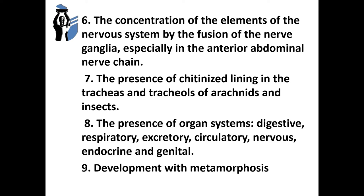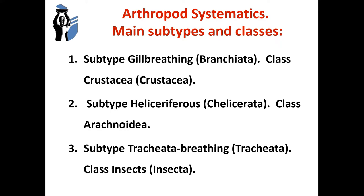There is a chitinized lining in the trachea of arachnids and insects. The presence of organ systems: digestive, respiratory, excretory, circulatory, nervous, endocrine, and genital. Development occurs with metamorphosis. Main subtypes and classes include subtype Branchiata (class Crustacea), subtype Chelicerata (class Arachnoidea), and subtype Tracheata (class Insecta).